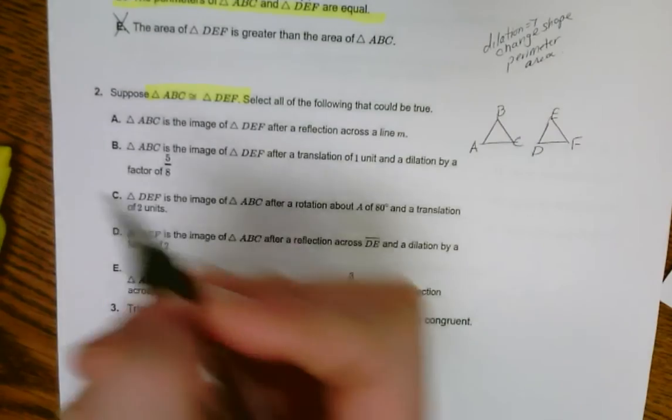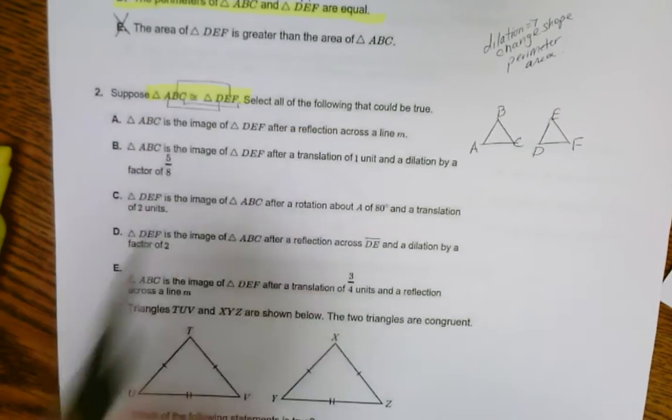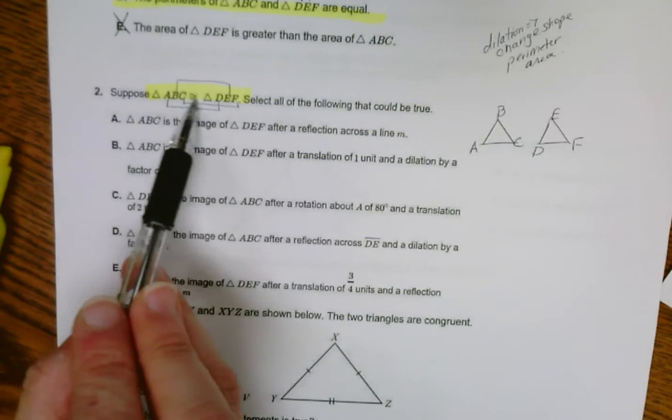And we know that A is congruent to D, B is congruent to E, and C is congruent to F because of the way that the letters were ordered.